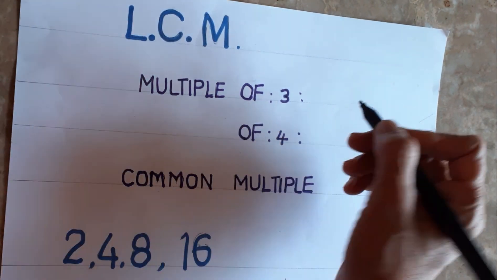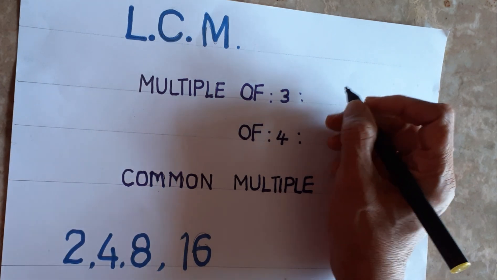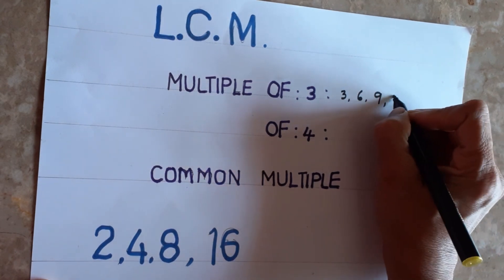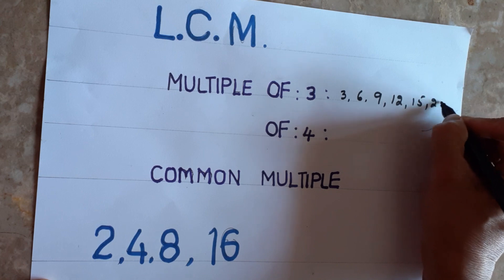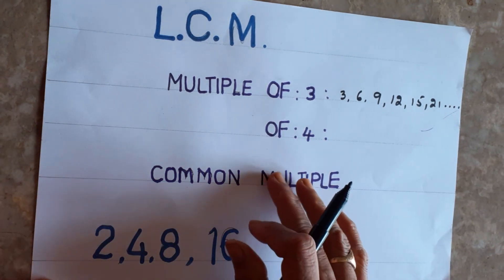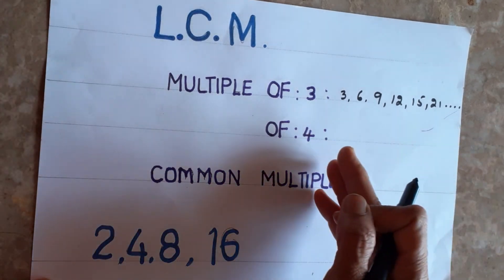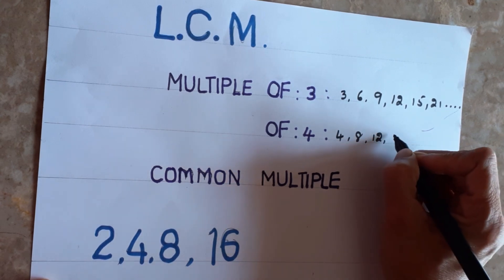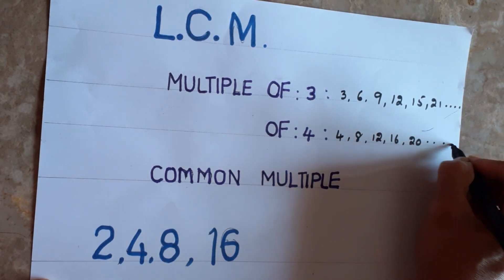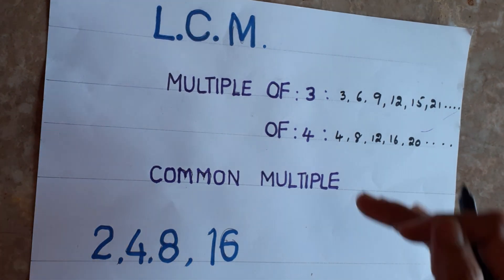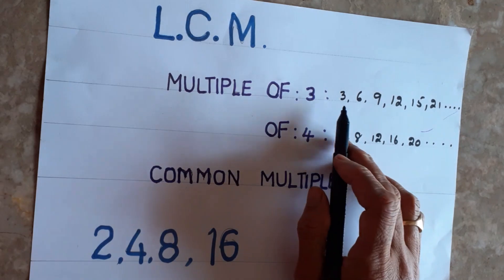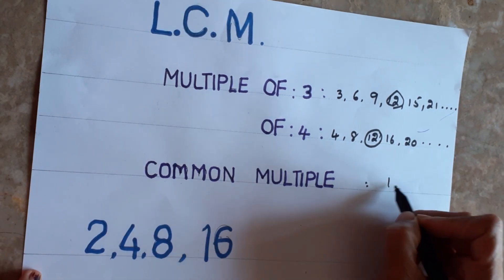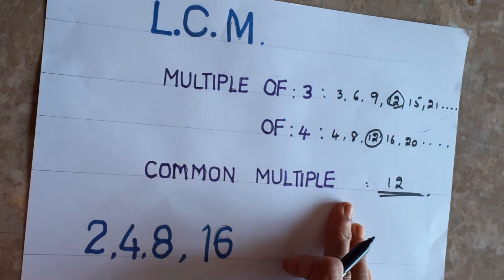Multiples of 3 means you write the 3 times table: 3, 6, 9, 12, 15, 21, and so on. Multiples of 4 means you write the 4 times table: 4, 8, 12, 16, 20, and so on. If they ask what is the common multiple of 3 and 4, the answer is 12 — it appears in both lists. This is the basic concept.